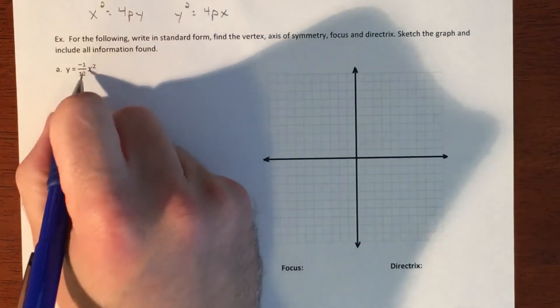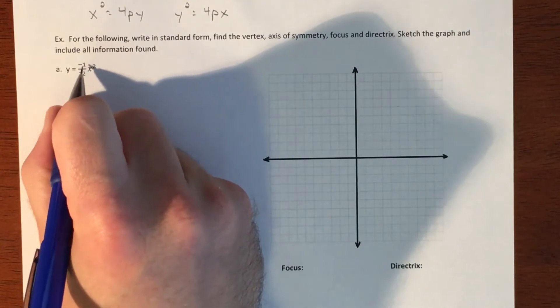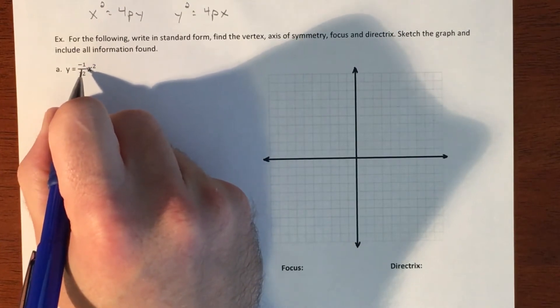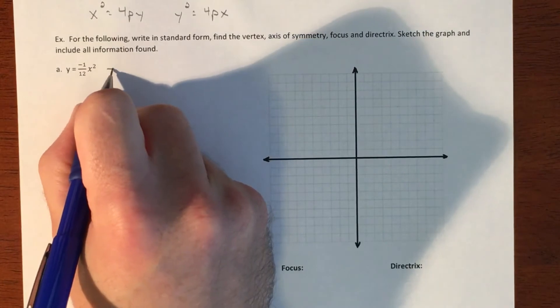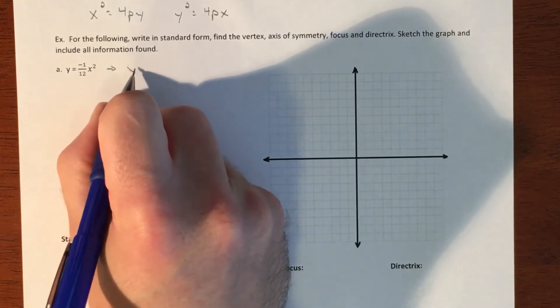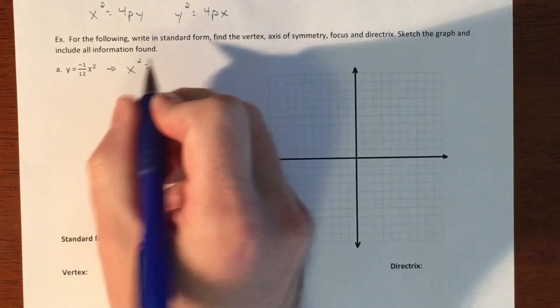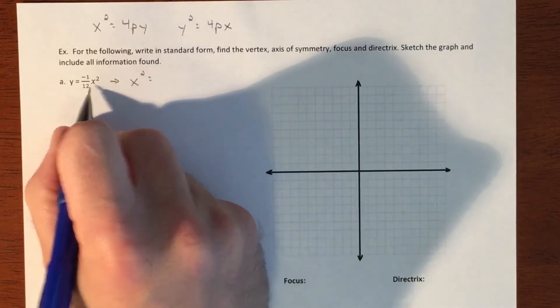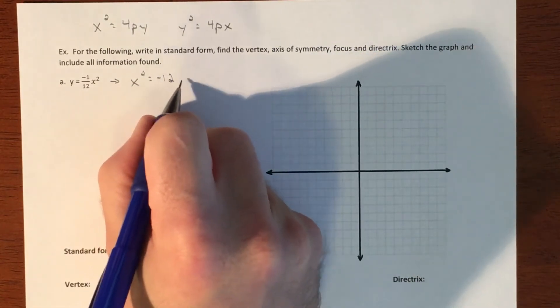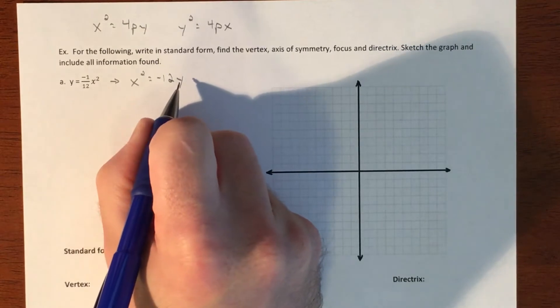So this equation, we're going to need to take this negative 1/12th, and we're going to need to multiply the reciprocal over to the other side. So that makes this equation, if we get the x squared by itself, that makes this equation look like negative 12y. So x squared equals negative 12y.